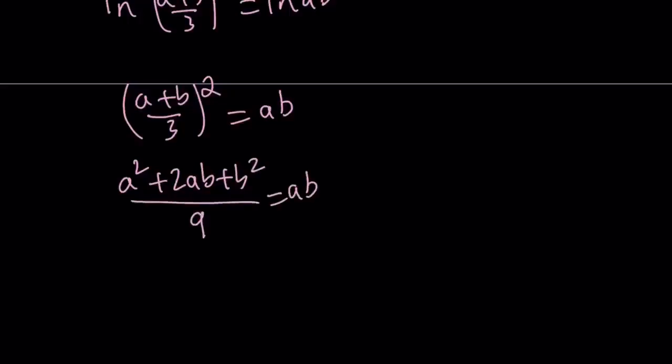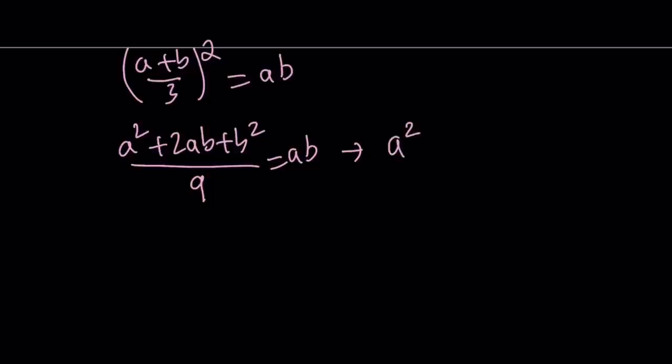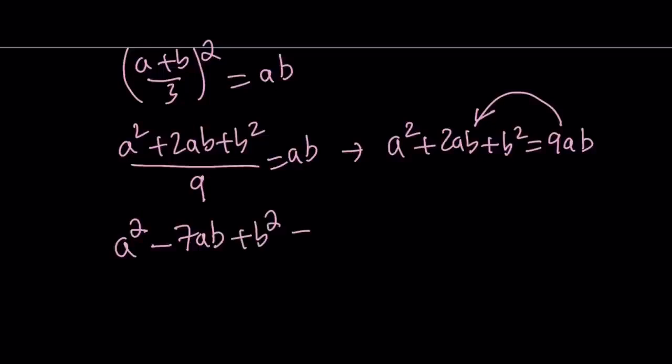And if you go ahead and expand the numerator and multiply the denominator by itself, you get (a² + 2ab + b²)/9 equals ab. And then if you do cross-multiplication, you're going to get a² + 2ab + b² equals 9ab.